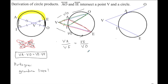If we cross multiply, I have VA times VO, VI times VE.